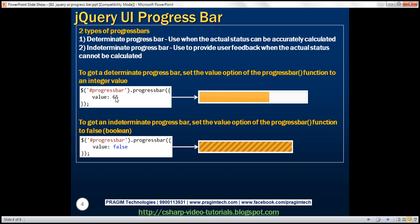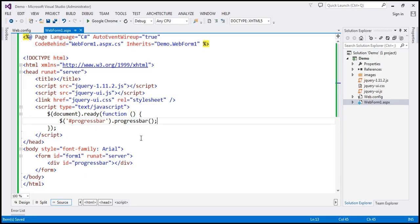At the moment, we have set it to 65. To get an indeterminate progress bar, set the value option to false. So the value option of the progress bar function supports two different data types: integer and Boolean. Let's look at these two in action.